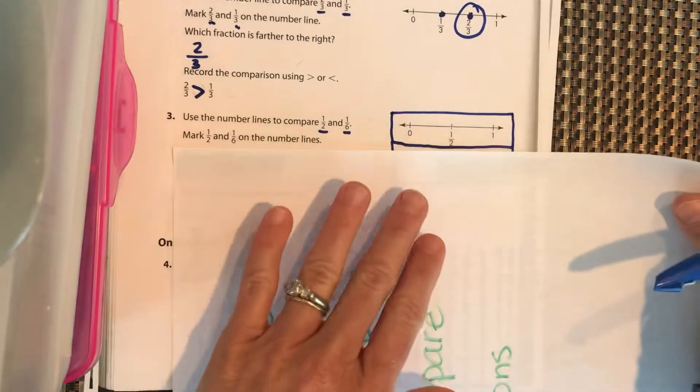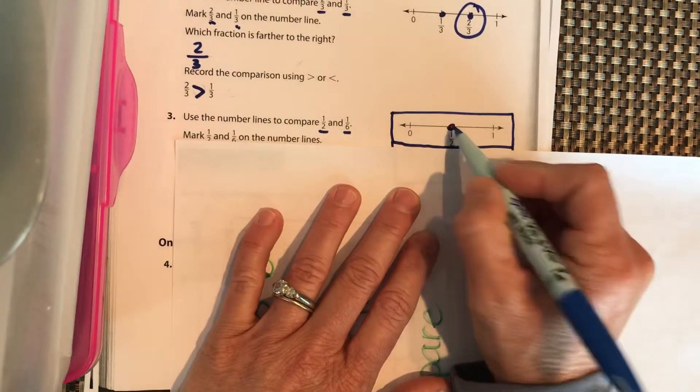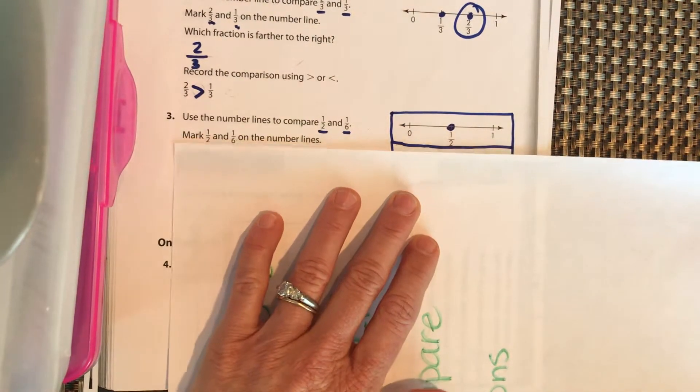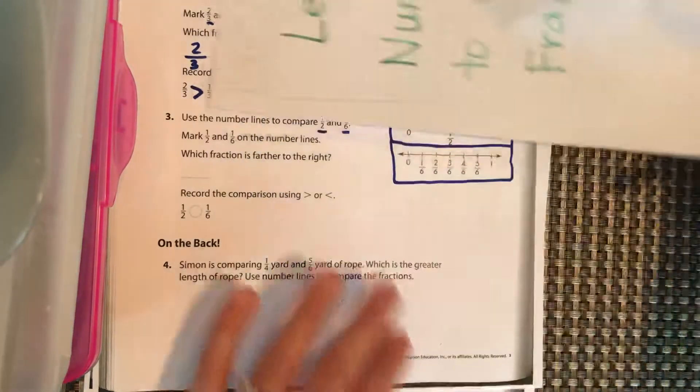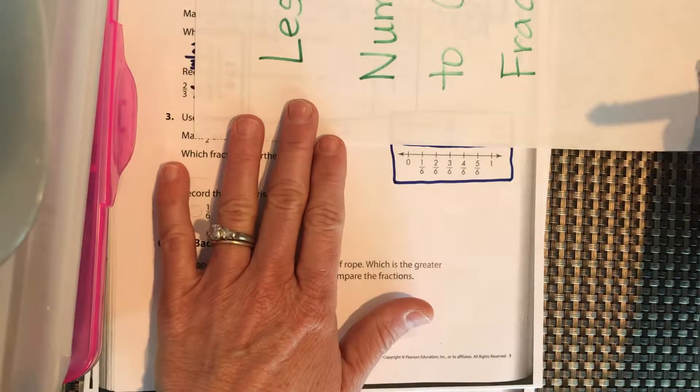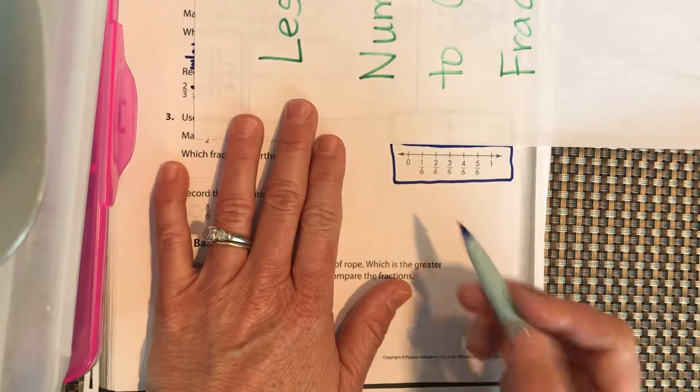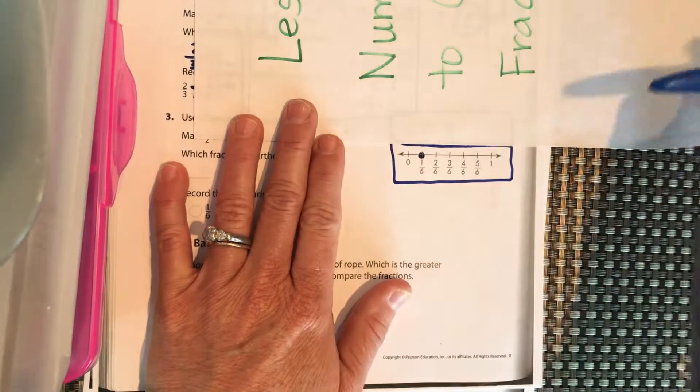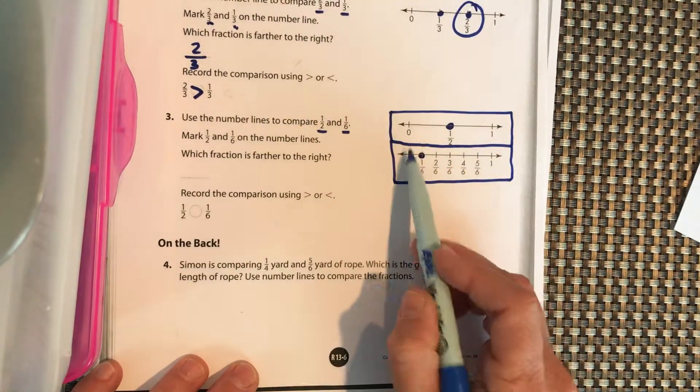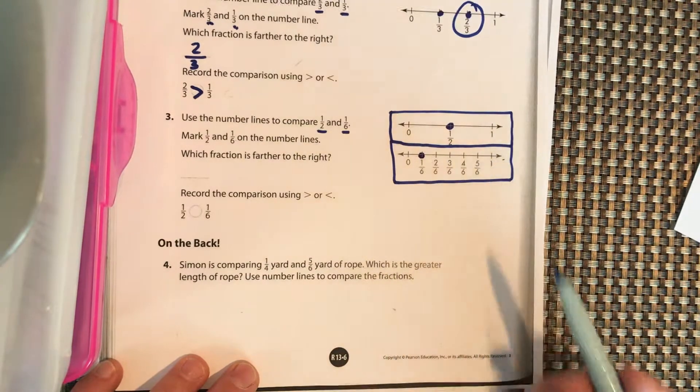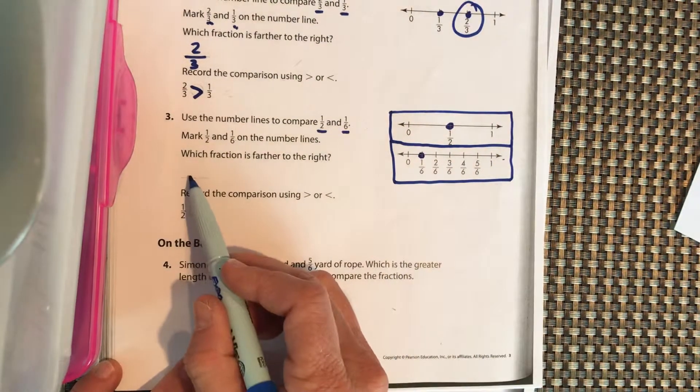Ignore this one for now. Where is 1/2? Right there, good. And let's look down here at 1/6. Where is 1/6? Put a dot on 1/6. Now we can look at our number lines. Which one is further to the right? Which one is closer to 1? Write that fraction right here.